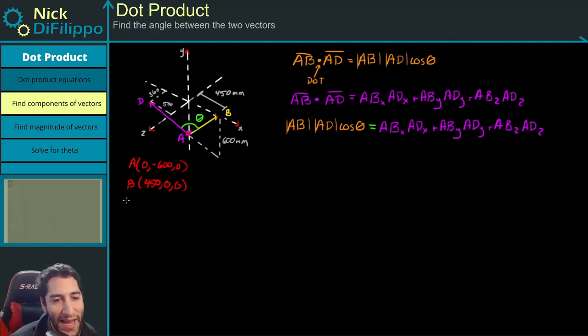Now D lies in that x-z plane, so D is going to have, we go over minus 500 in the x. So minus 500 in the x, then we go 0 in the y, we're not going up anywhere, and we go 360 in the z direction. So these are our points.